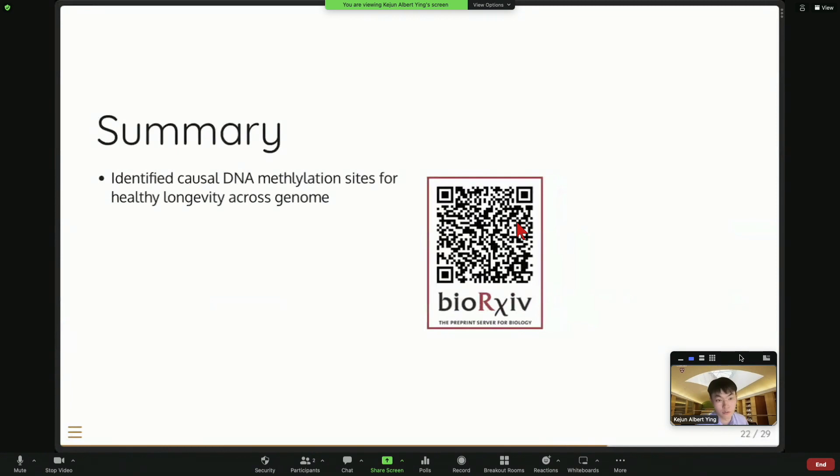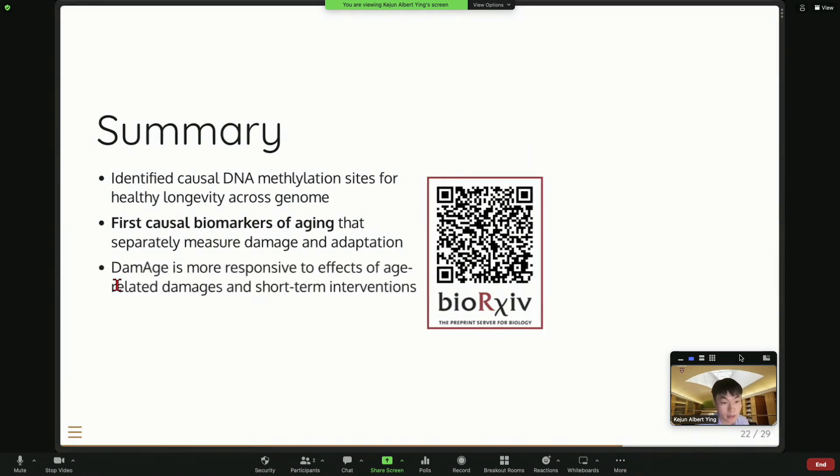So to summary, we built this first causal DNA methylation. We identified the causal DNA methylation site across genome for healthy longevity. We built this first causal biomarker of aging that potentially can separate damage and adaptation. And the damage is more responsive to effect of the aging-related damage and short-term intervention.